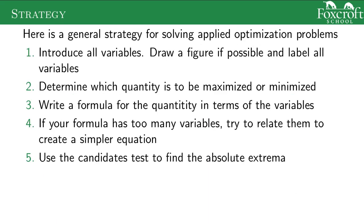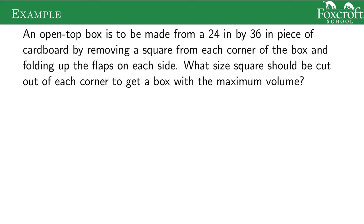Here's the general strategy. The strategy is to do the best you can — draw stuff that might help, label quantities using variables, figure out how those quantities are related. It's kind of trial and error until you see the patterns. Now here we have an open-top box. We have this flat piece of cardboard, and we're going to take a little corner out of each corner. If we fold those sides up, it'll create an open-top box. This is 36 by 24, and we want to know what size square we should cut out. We call those squares x by x.